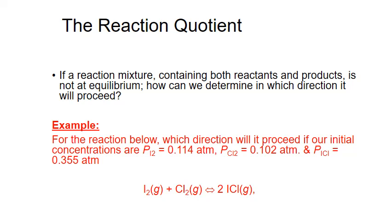Let's look at an example. Here we'll look at the reaction between iodine gas and chlorine gas to produce iodine monochloride gas. We're given initial concentrations in units of pressure (atmospheres): the partial pressure of iodine is 0.114 atm, chlorine is 0.102 atm, and our product iodine monochloride is 0.355 atm.